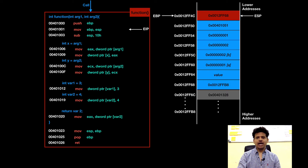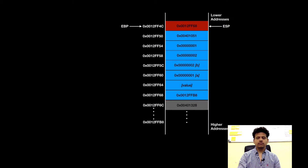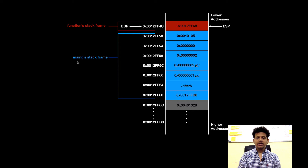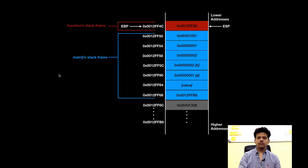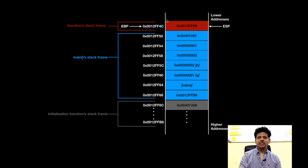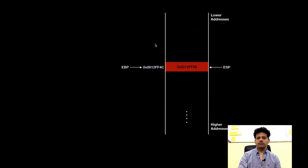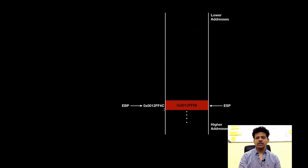Let's analyze our stack. This is a function stack frame. This is a main stack frame and it contains main's local variables, registers, and arguments that were passed to the function, etc. And this is the initialization function stack frame who called main. As we can see, our viewing area is full. We will only see the stack from this point and I will hide these elements. When we return to main, I will show these elements.